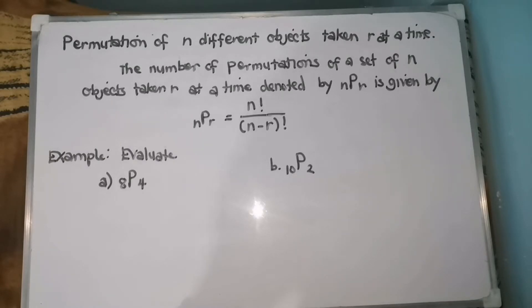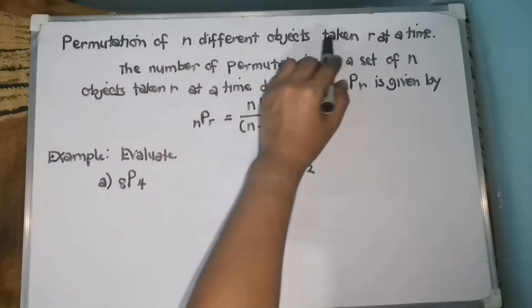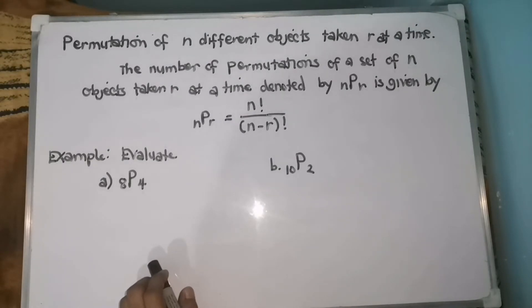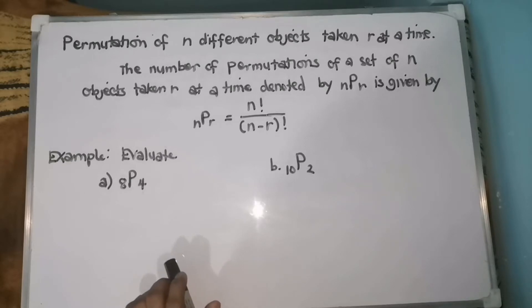For today's video, I will be discussing one of the types of permutations, which is permutation of N different objects taken R at a time. We can apply this concept in real-life situations. For example, if we have 10 contestants and we are going to select the Top 3 Winners, that is one example where N is 10 contestants and R is 3.